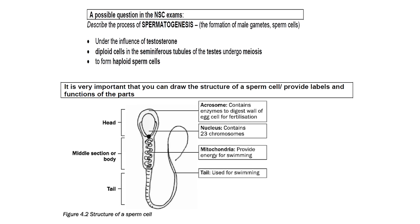A possible question in the NSC exams: describe the process of spermatogenesis. Note that describe is the action verb. Spermatogenesis is the formation of male gametes or sperm cells. Under the influence of testosterone, diploid cells in the seminiferous tubules of the testes undergo meiosis. The type of cell division is meiosis, and the product of spermatogenesis is haploid sperm cells.